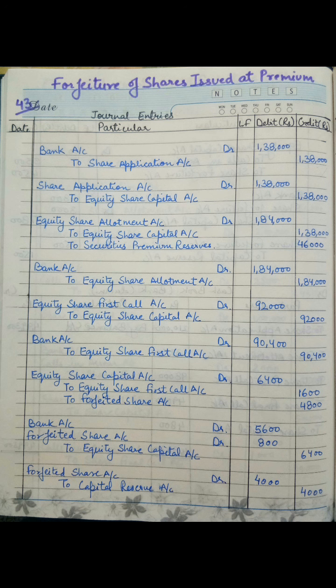From this we can conclude that the company could have allowed a discount of 4,800 rupees but has given a discount of only 800 rupees. The difference of these two, that is 4,000 rupees, would be transferred to Capital Reserve. So the last entry is: Forfeited Share Account debit to Capital Reserve. The remaining 4,000 rupees, which is the capital gain for the company, is transferred to the Capital Reserve Account.